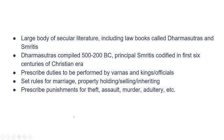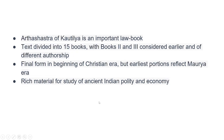The large bodies of secular literature include law books known as Dharmashastras and Smritis. Dharmashastras are codified and prescribe duties to be performed by the king or officials, rules for marriage, property holdings, inheritance, and punishments. Kautilya's Arthashastra is a very important law book divided into 15 books, reflecting the Mauryan era. It has very rich material to study polity and economy.